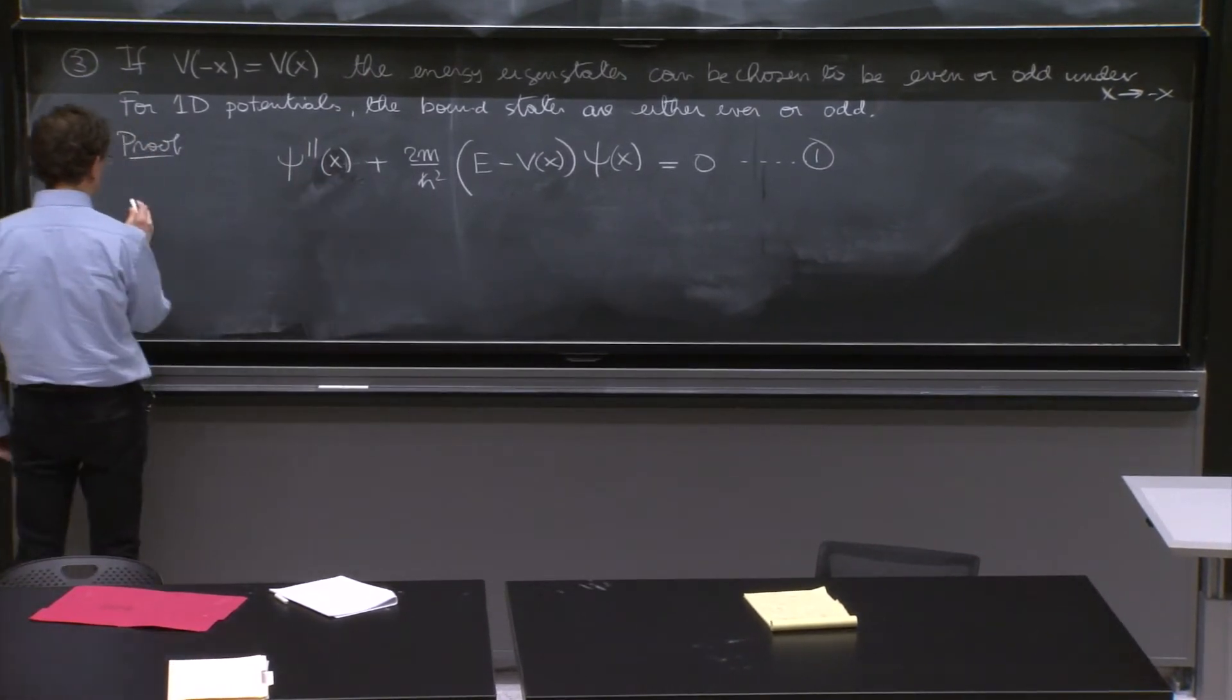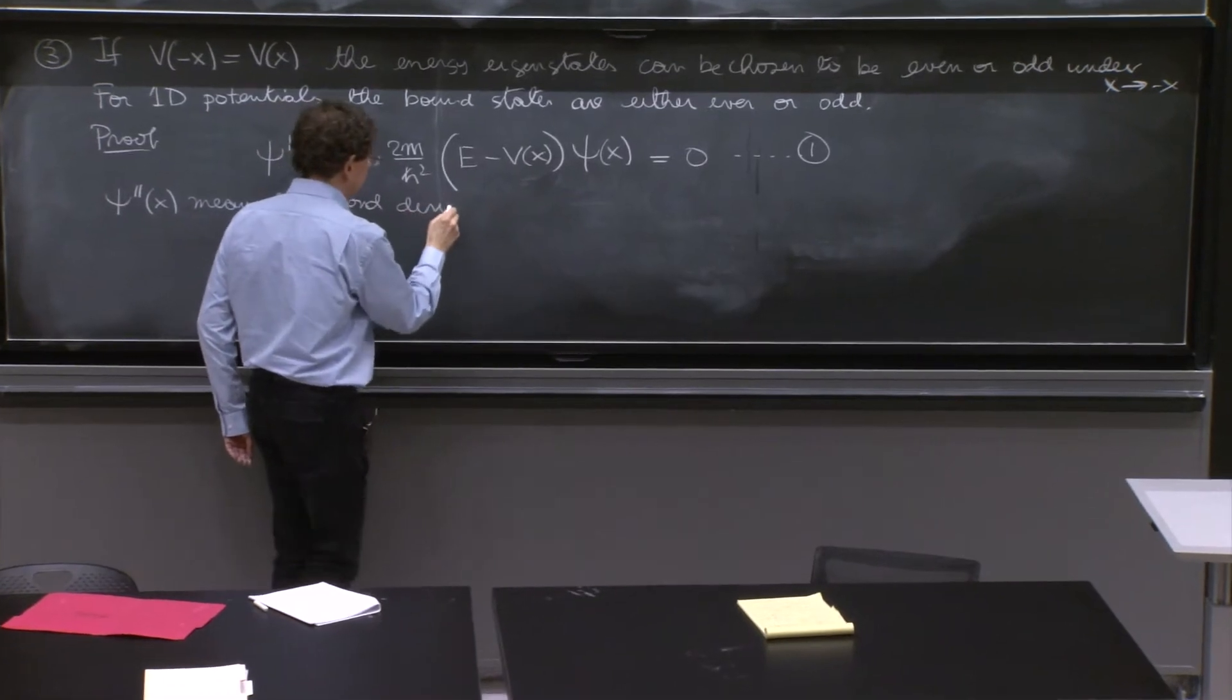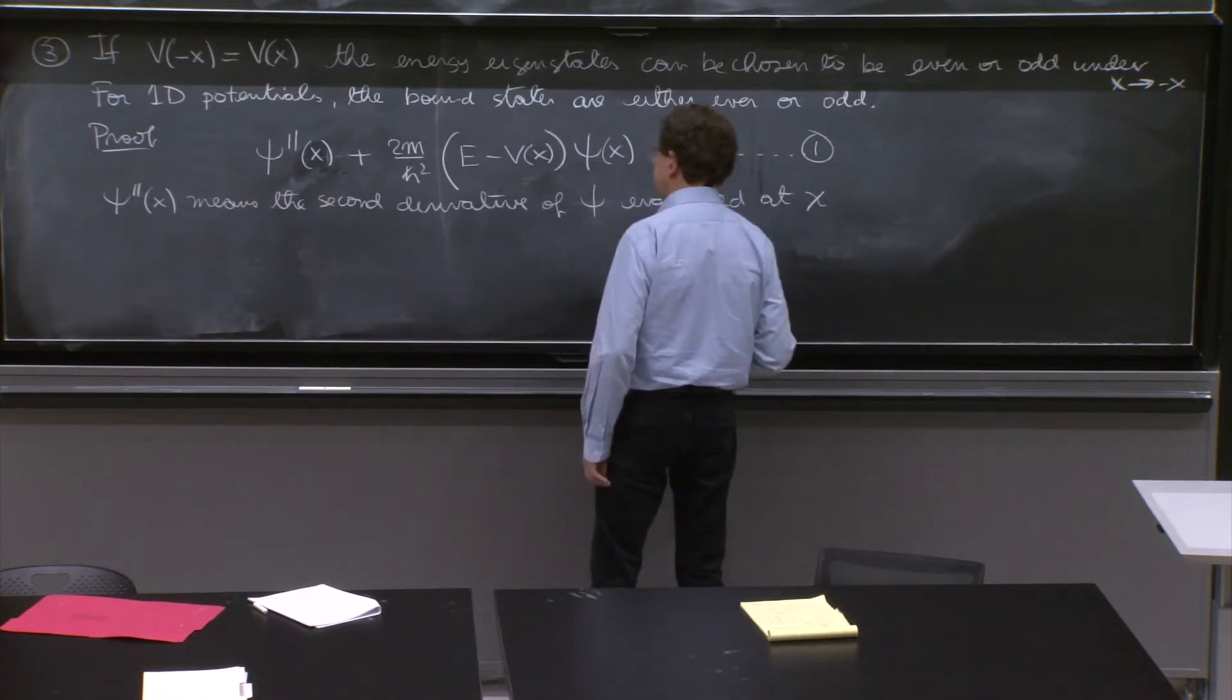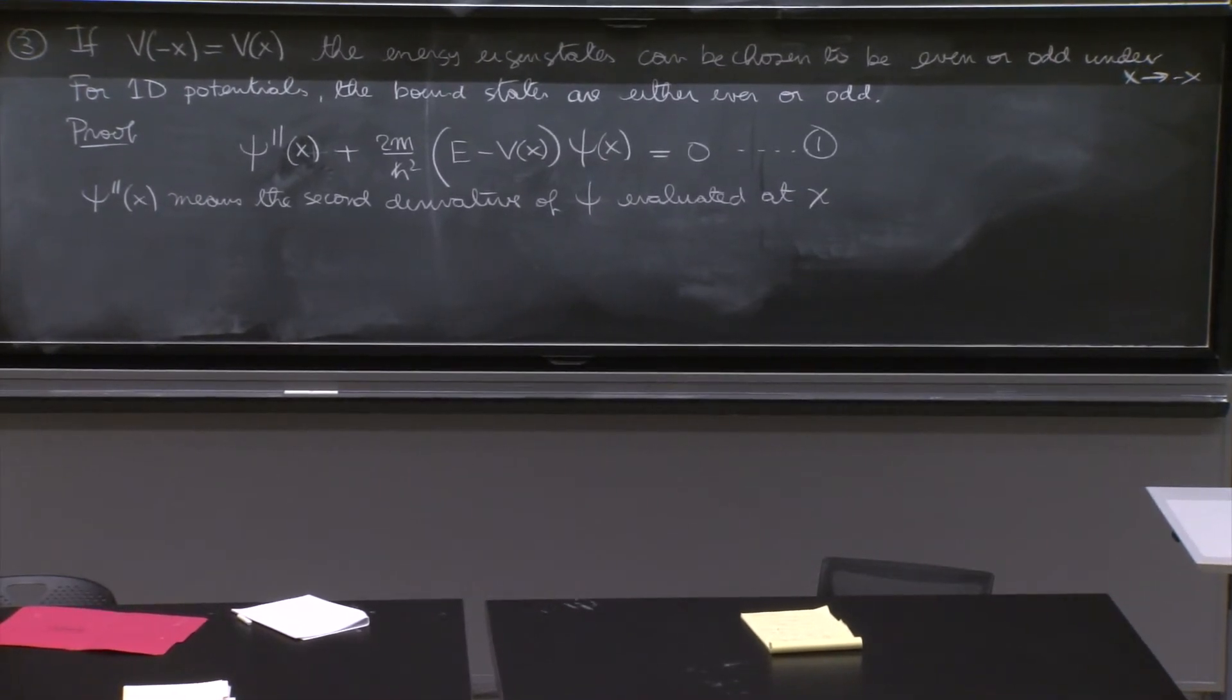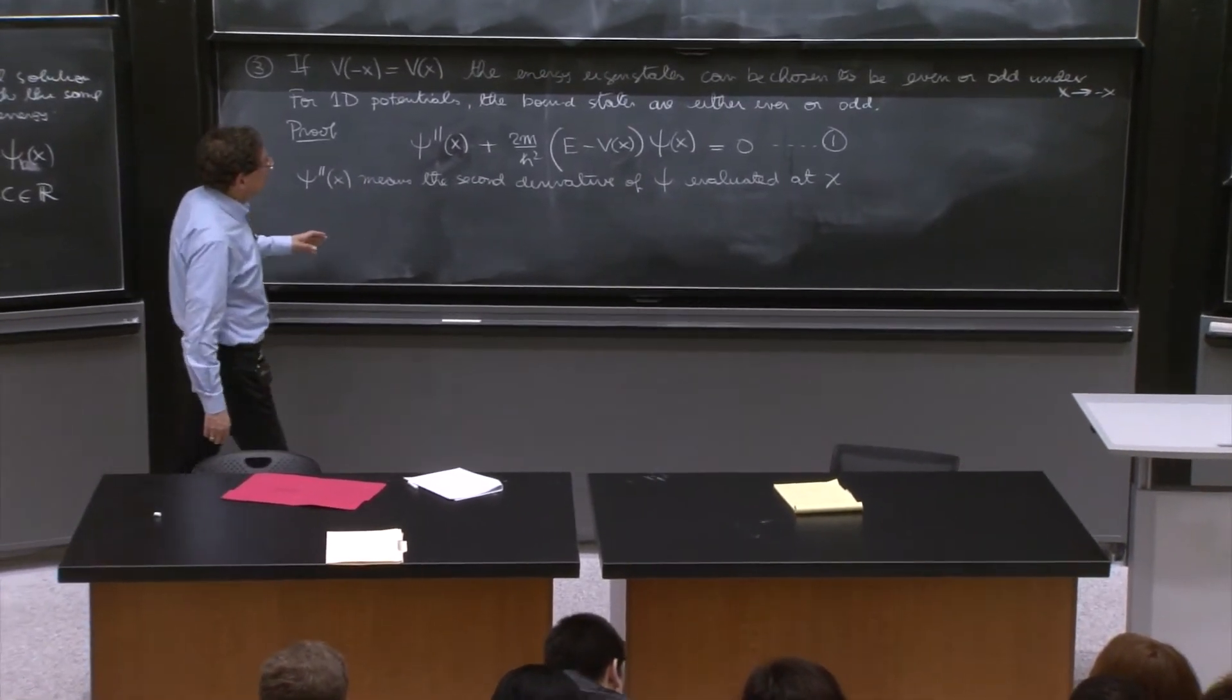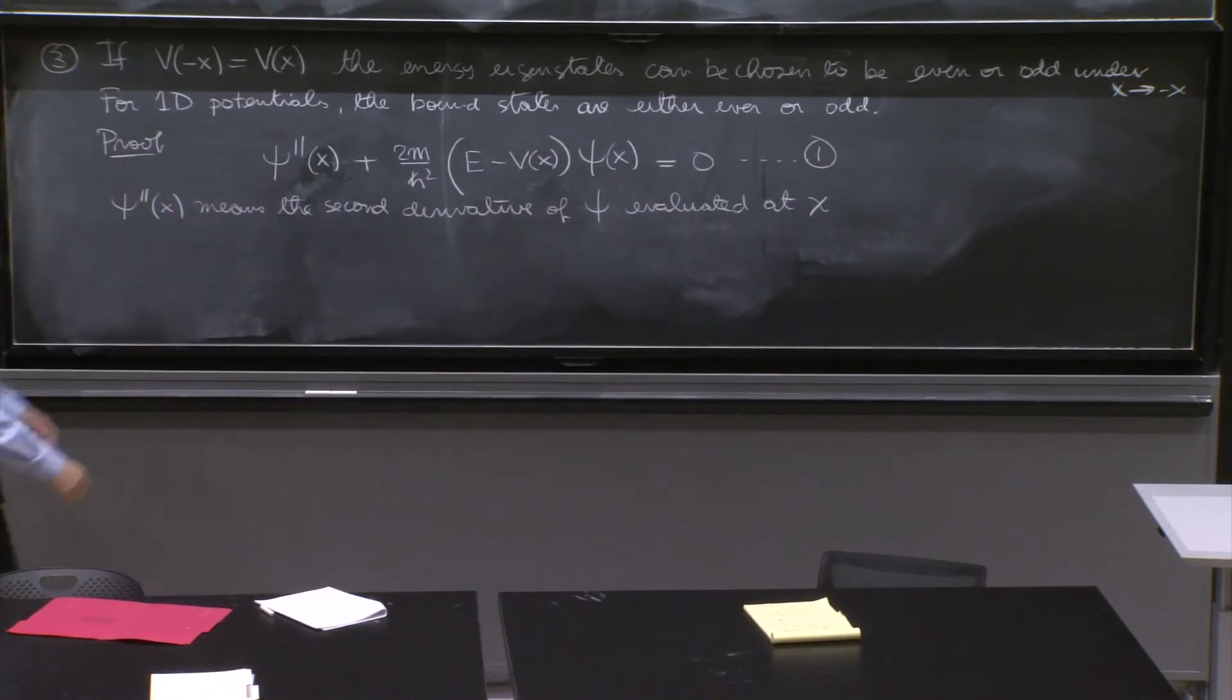And ψ''(x) notation means the second derivative of ψ evaluated at x. You see, what you want to do is to show that ψ(-x) solves the same equation. It's kind of clear. Well, you sort of put ψ(-x) here, minus x here. Well, you would do minus x here. But if the potential is even, it will solve the same equation.